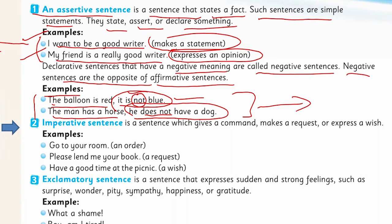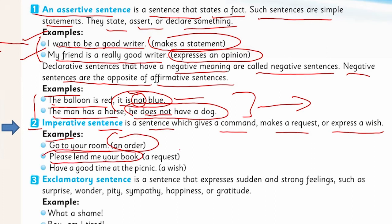Now look at the second type: the imperative sentence. An imperative sentence is a sentence that gives a command, makes a request, or expresses a wish. For example: 'Go to your room' is an order or command. 'Please lend me your book' is a request. 'Have a good time at the picnic' is a wish — wishing someone to have a good time.